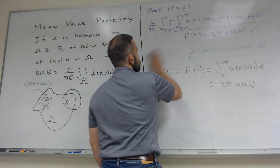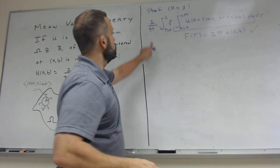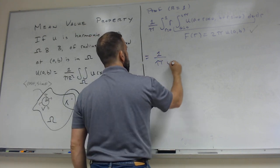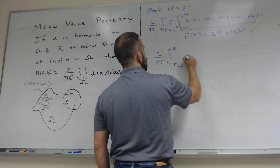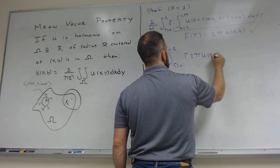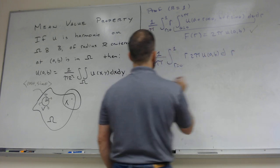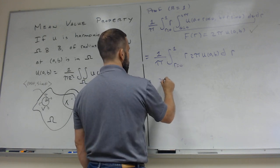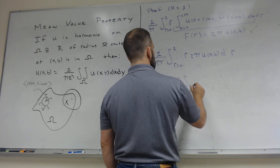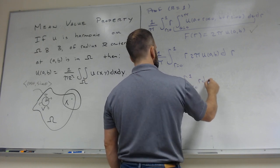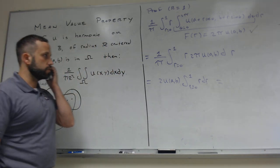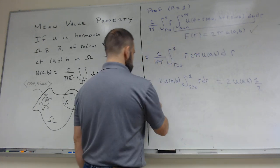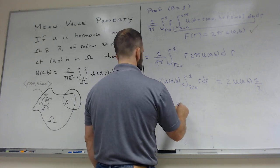Now I plug this into my integral. Continuing the computation: this equals 1 over π times the integral from r = 0 to 1 of r · 2π U(A, B) dr. Since 2π U(A, B) is a constant in r, I can pull it out. The π's cancel, giving 2 U(A, B) times the integral from 0 to 1 of r dr. The antiderivative of r is r²/2; from 0 to 1 this is 1/2. So 2 times 1/2 is 1, and the result is U(A, B).